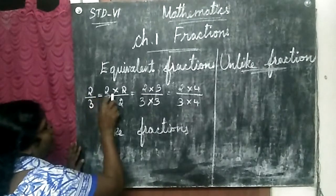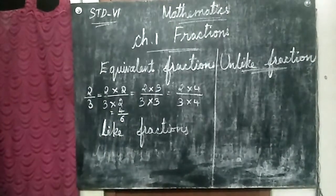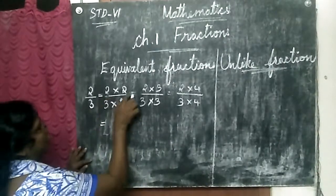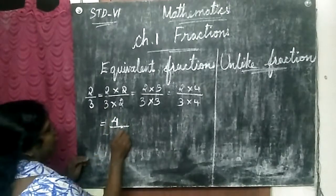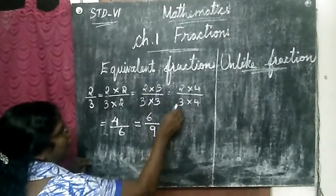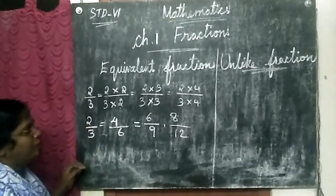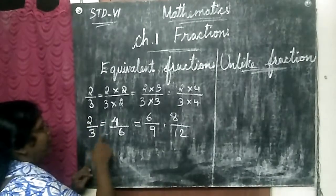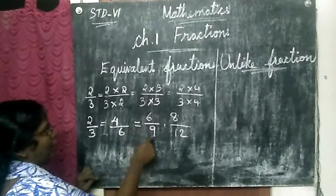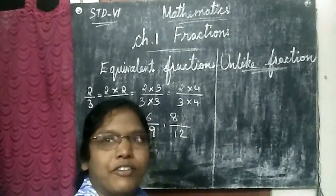So two by three: multiply by two — two twos are four, three twos are six, giving four by six. Multiply by three — two threes are six, three threes are nine, giving six by nine. Multiply by four — two fours are eight, three fours are twelve, giving eight by twelve. Understood, everybody? This is called equivalent fractions.